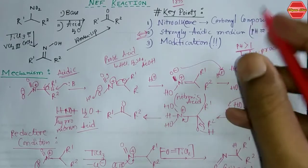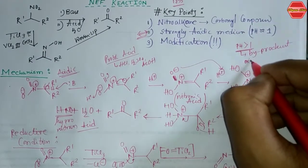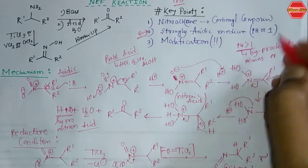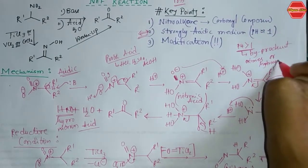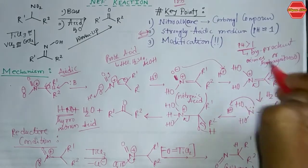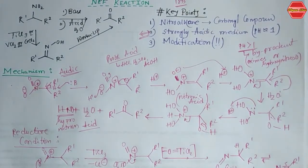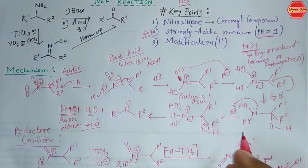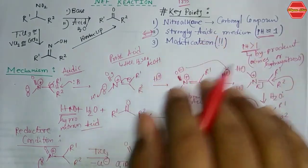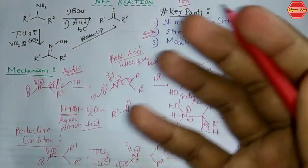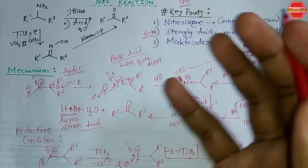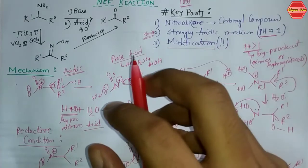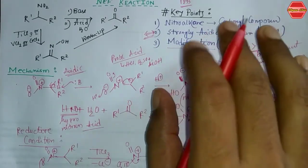The byproducts formed when pH is greater than one are oximes or hydroxy nitroso compounds. This is why maintaining pH near one is very important for the reaction. Now the next important aspect is the modification of the Neff reaction.